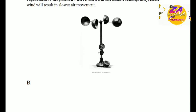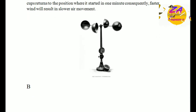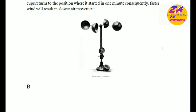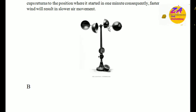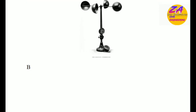This is a figure of the anemometer showing the different parts — the cups, the arm, and the dial gauge.